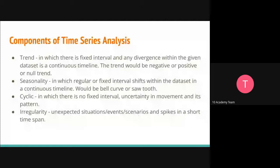What are the components of time series? We have different components — the various forces which affect the value of our observation in the time series. It could be a trend, seasonality, cyclic, or irregular. A trend could be positive or negative, and it represents a persistent or long-term change in the mean of the series. It is the slowly moving part of the series and represents change over a large time scale.